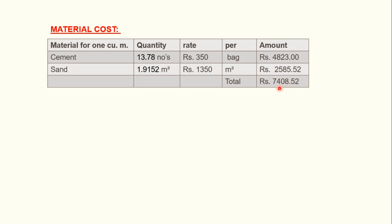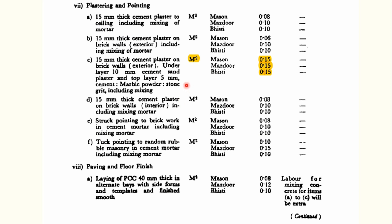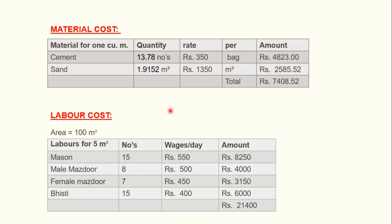Adding these two values gives a total material cost of 7408.52 rupees. Now let's calculate labor cost. Indian Standard IS 7272 suggests that for 15 mm thick cement plaster on a brick wall — 10 mm base coat and 5 mm top coat — for one square meter we need 0.15 mason, 0.15 mazdoor, and 0.15 bhisti. For 100 square meters: 15 masons, 15 mazdoors, and 15 bhistis.